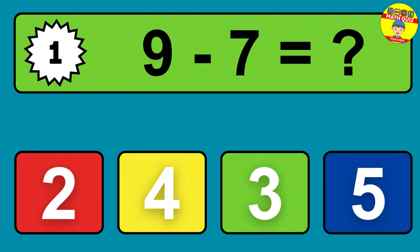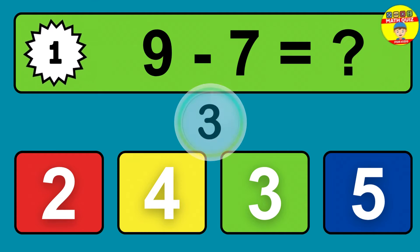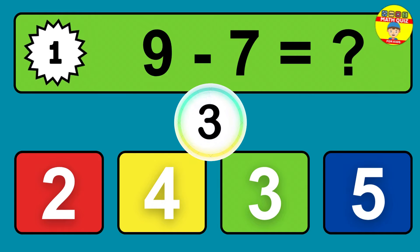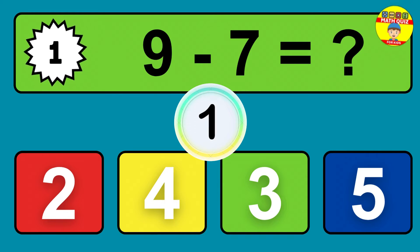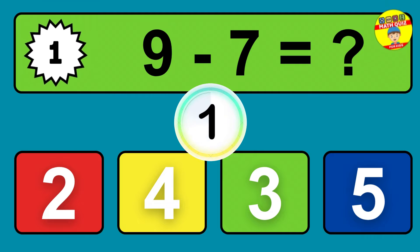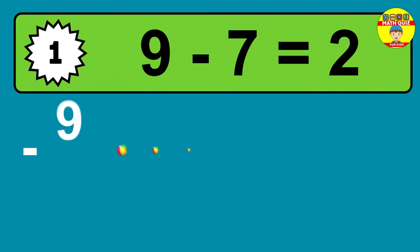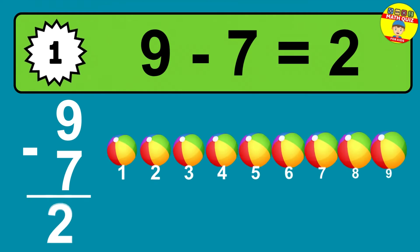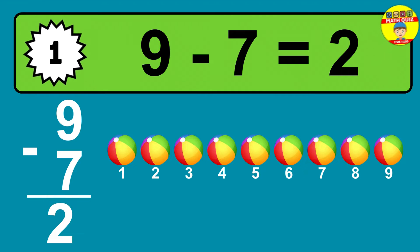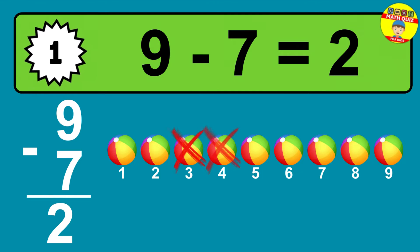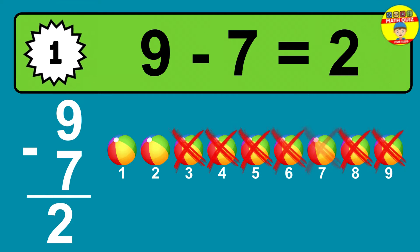Question one: nine minus seven equals what? The answer is nine minus seven is two. Let's count it: one, two.